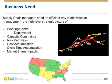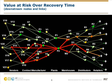The business need is: supply chain managers need an efficient way to show senior management a high-level strategic picture of things like working capital deployment, capacity constraints, risk pathways, cost accumulation, cycle time accumulation, or market share impacts in the supply chain.